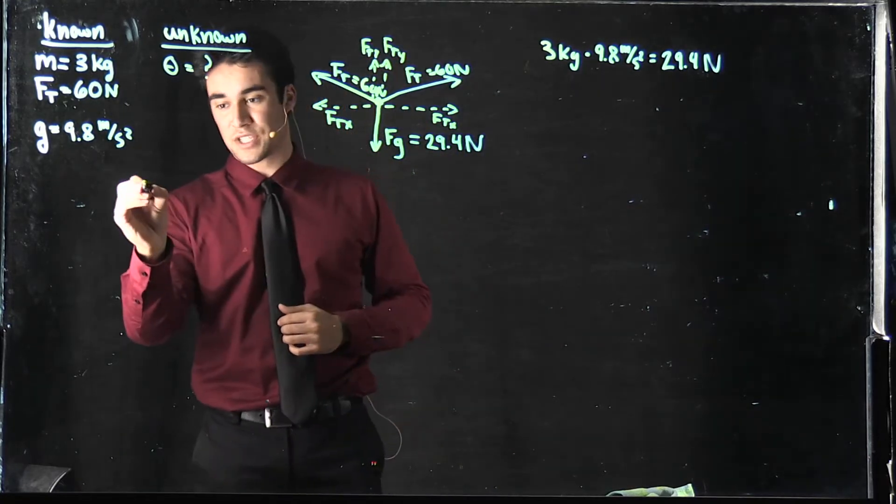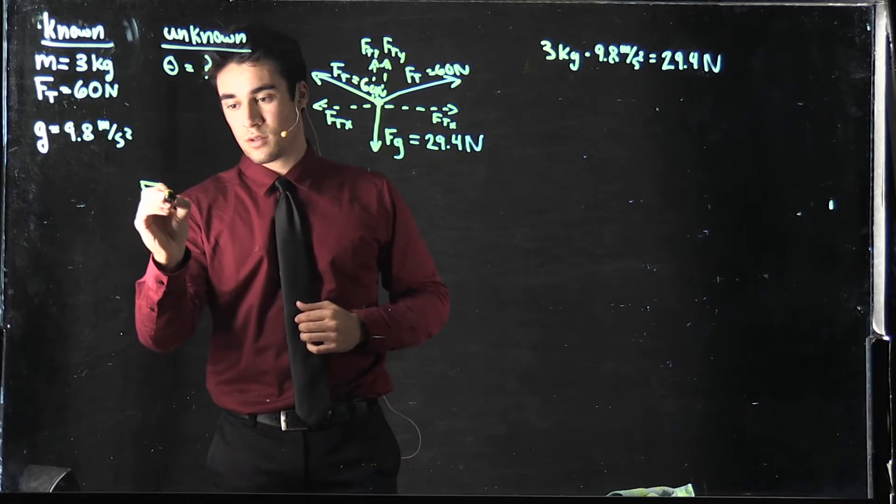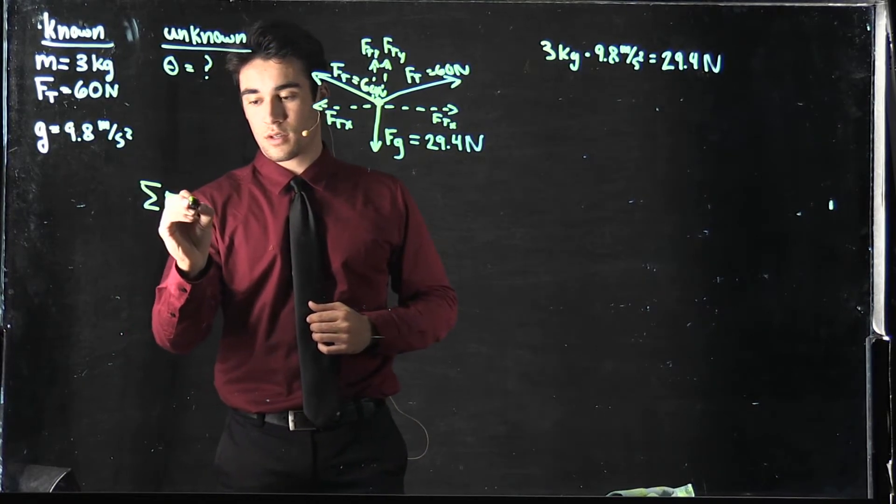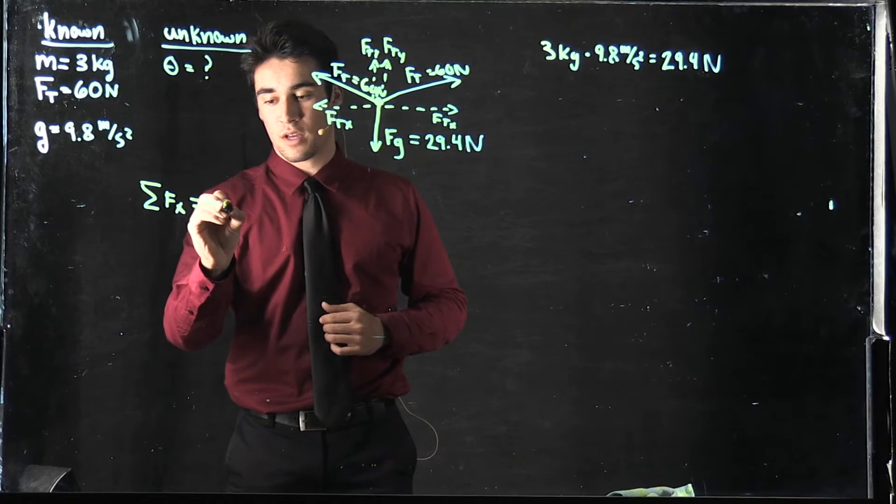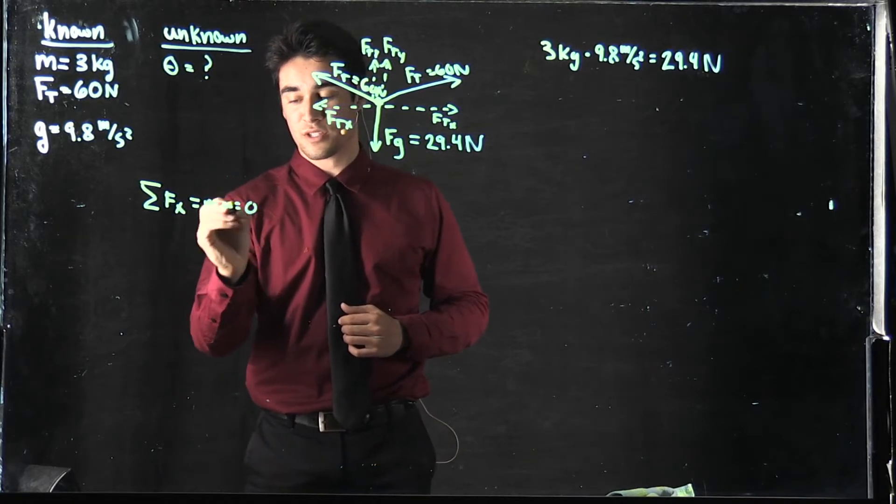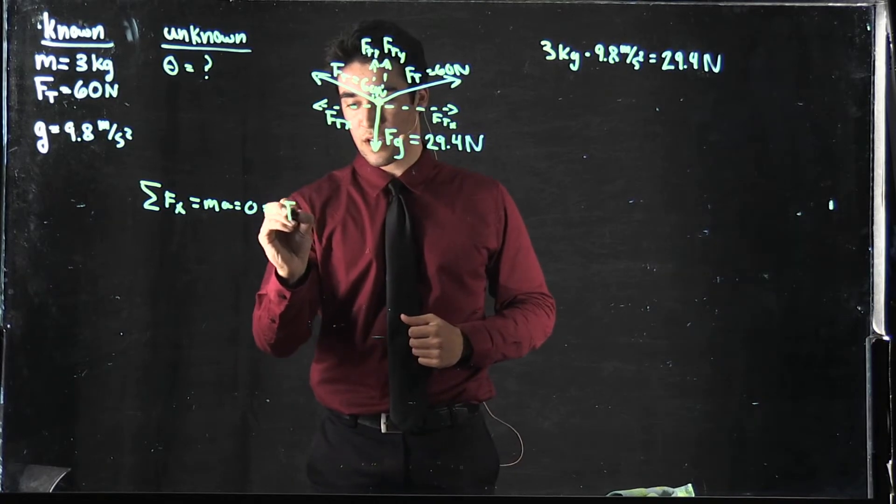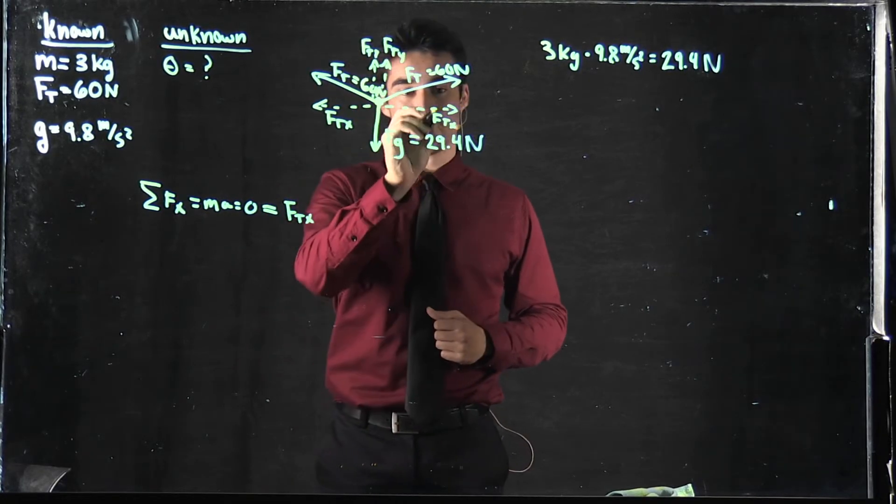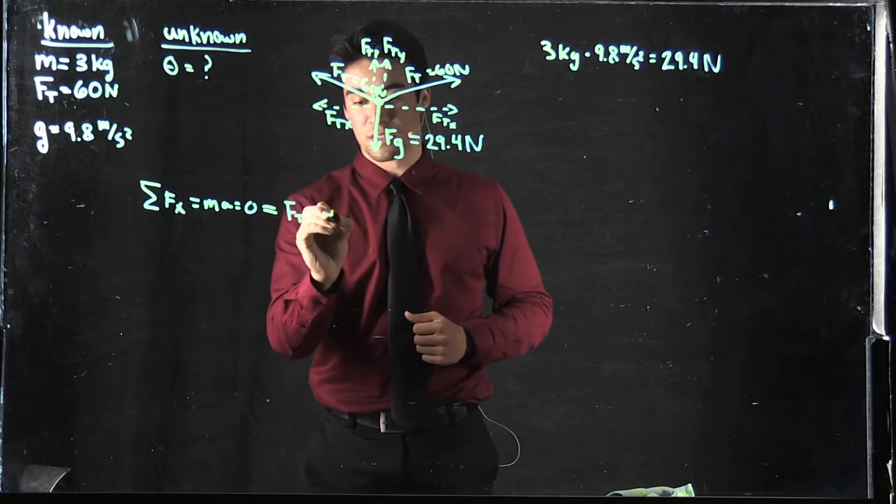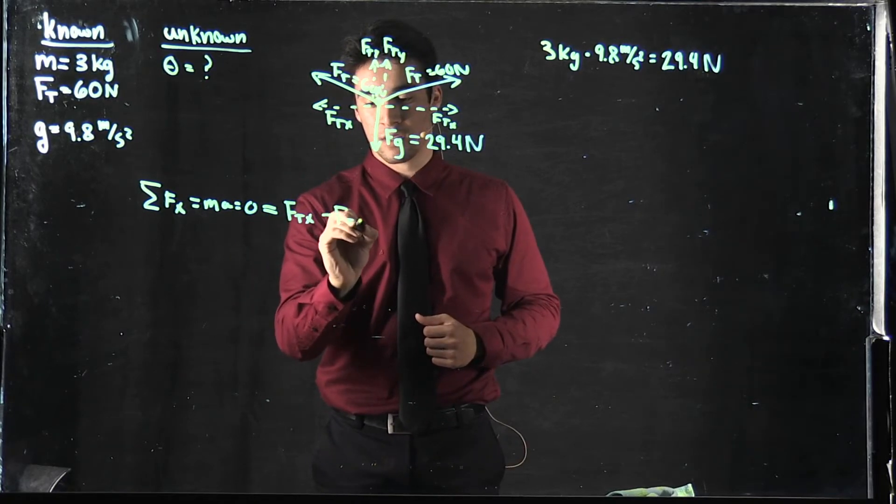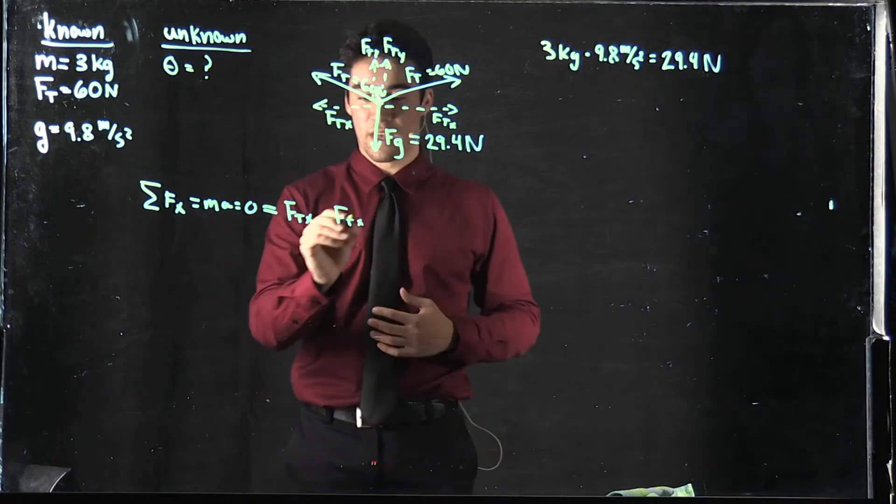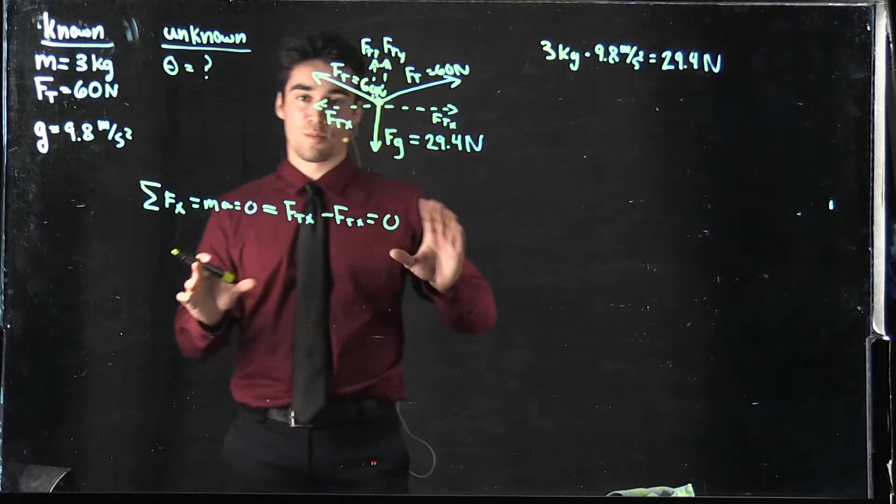Let's do the sum of the forces in the x direction. Equals ma, which equals zero, we know that because there's no acceleration. Now, this equals force of tension in the x direction minus the force of tension in the x direction because it's going in the opposite direction. Obviously, these are going to cancel out and equal zero. So we know there's no problem in the x direction.